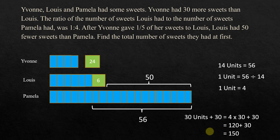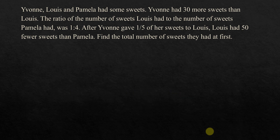Now I'm going to solve this problem using algebra. Yvonne, Louis, and Pamela had some sweets. Yvonne had 30 more sweets than Louis. The ratio of Louis to Pamela was 1 to 4. After Yvonne gave one-fifth of her sweets to Louis, Louis had 50 fewer sweets than Pamela. Find the total number of sweets they had at first.